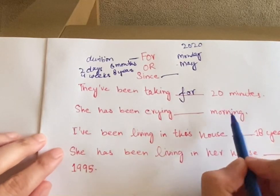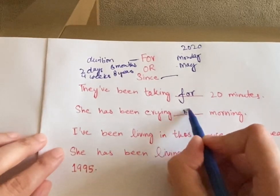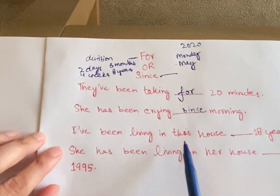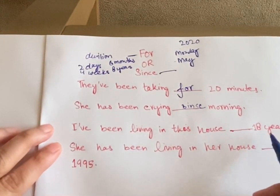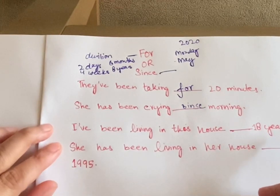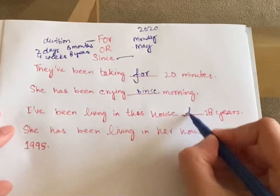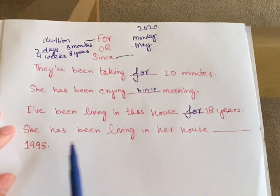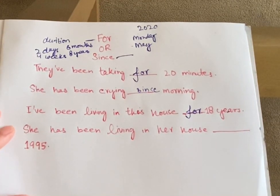'She has been crying since morning.' Morning is the starting point — it specifies when she started crying — so we use 'since.' 'I've been living in this house for 18 years.' Here, 18 years is not specified; it could be any 18 years, so we use 'for.' Last one: 'She has been living in her house since 1995.' Since or for? Of course, it's 'since.'